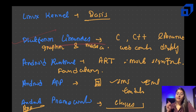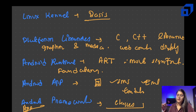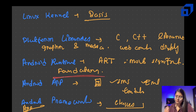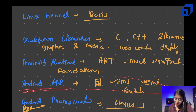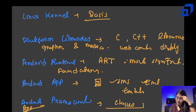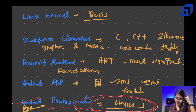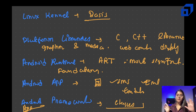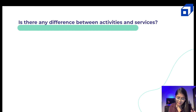The fifth component is the Android framework, which contains classes used in the creation of applications. To summarize: Linux kernel forms the basis; platform libraries include native C/C++ libraries for graphics and media; Android Runtime is the most significant component and forms the foundation; Android applications are the pre-installed apps you use daily; and the Android framework contains the classes used for developing applications.